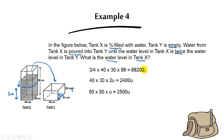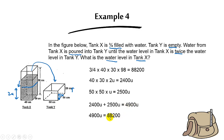Since the total volume stays the same, the amount of water in tank X plus the amount of water in tank Y equals the total volume. So 2,400 units plus 2,500 units equals 4,900 units, and this 4,900 units represents 88,200 cm³. From here, one unit equals 88,200 divided by 4,900, which is 18 cm. Since tank X has two units, the final answer is 18 times 2 = 36 cm. That is the water level in tank X.